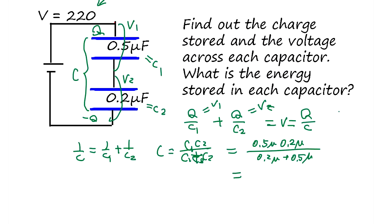So the total capacitance works out to 0.143 microfarads. Now using this, the charge Q is going to be V times C, so 220 volts times 0.143 microfarads.